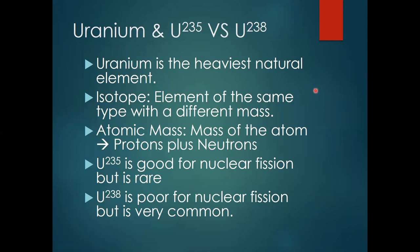Uranium-235 versus uranium-238. Uranium is the heaviest natural element, which is why it's chosen to be used in nuclear fuels, because the larger the nucleus, the more energy that can be produced when it is ripped apart or undergoes nuclear fission. The word isotope means an element of the same type with a different mass. You can see here uranium-238 and uranium-235 — these are two isotopes of uranium.